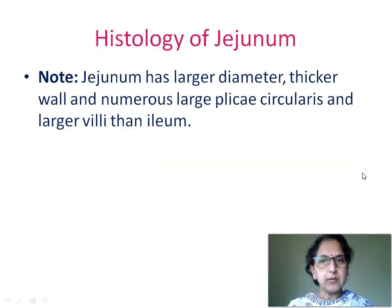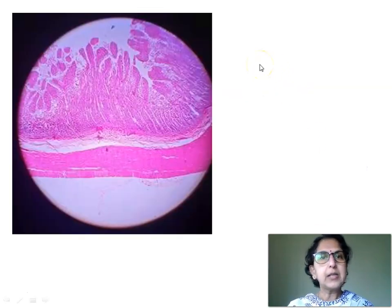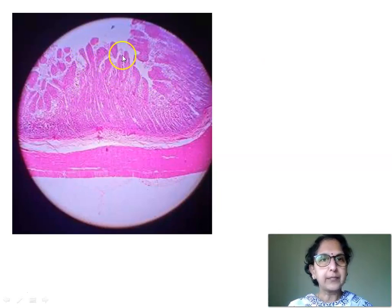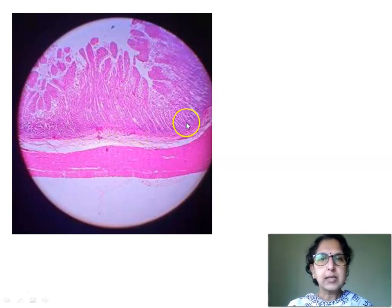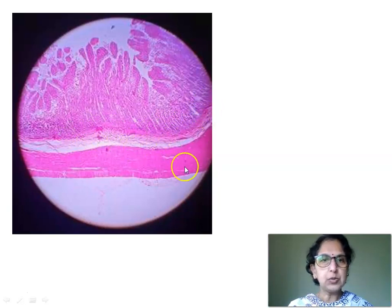Kindly note: jejunum has a larger diameter, thicker wall, and numerous large plicae circulares and larger villi compared to ileum. In a low power view of an H&E stain slide of histology of jejunum, we see finger-like villi, the intestinal glands or crypts of Lieberkühn, the muscularis mucosae, the submucosa with connective tissue, the muscularis externa, and serosa.